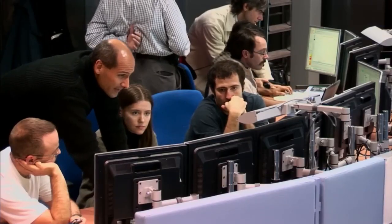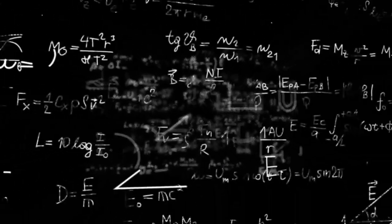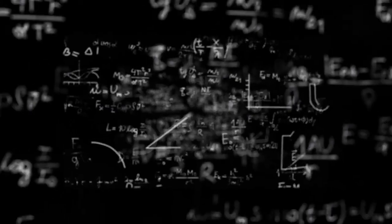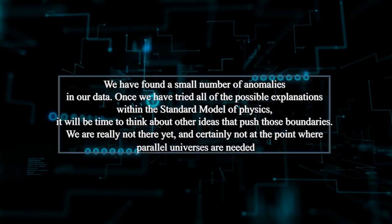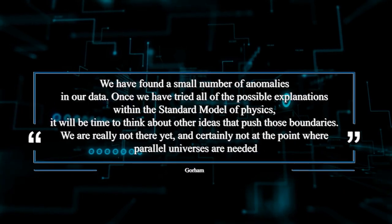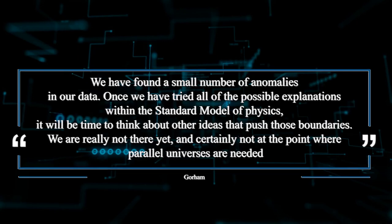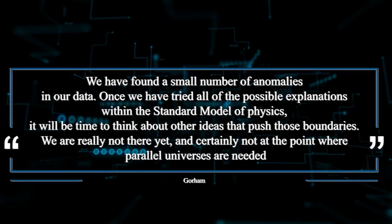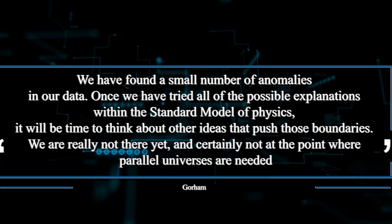Physicists have been working hard to figure out if these results can be explained by our current model of physics, if they have something to do with how the experiment was set up, or if something really strange is going on. Gorham, who is in charge of ANITA, said, we have found a small number of anomalies in our data. Once we have tried all of the possible explanations within the standard model of physics, it will be time to think about other ideas. We're really not there yet, and certainly not at the point where parallel universes are needed.